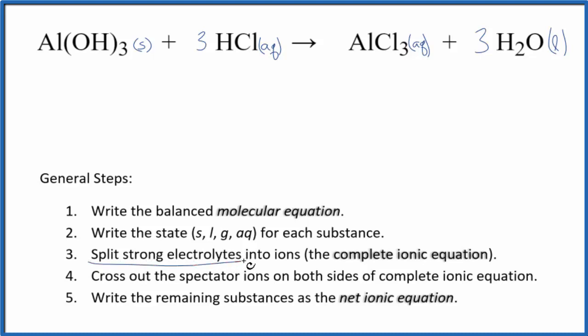Now we can split the strong electrolytes apart into their ions. That'll give us the complete or total ionic equation. So we said we don't split the aluminum hydroxide up, so we'll just write AlOH3. And I won't write the states now, let's do that at the end.